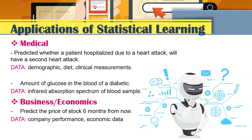Next are the applications of statistical learning. For medical examples: it is predicted whether a patient hospitalized due to a heart attack will have a second heart attack, with data including demographic, diet, and clinical measurements. Another medical example is predicting the amount of glucose in the blood of a diabetic person, using infrared absorption spectrum of a blood sample as data. In business and economics, an example is predicting the price of a stock six months from now, using company performance and economic data.